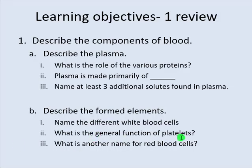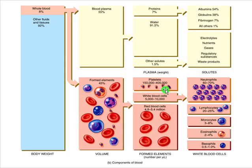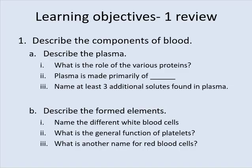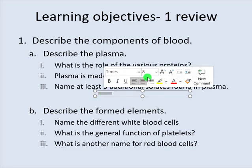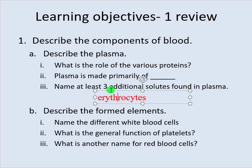What is the general function of platelets? They're involved in the clotting process — they help you stop bleeding. Fibrinogen also helps stop bleeding, and there's a multi-step process that will plug up holes in blood vessels. What is another name for red blood cells? The fancy name is erythrocytes — and that'll do it for this video.